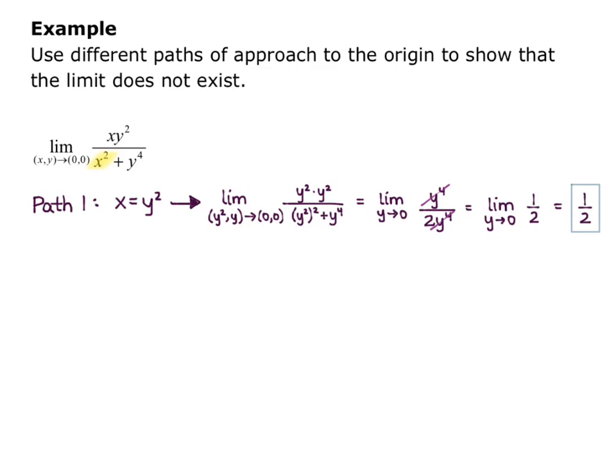Now I don't even have a y left, so that limit is obviously 1/2. So along path one, x equals y², which does approach the origin as x and y approach (0,0), the limit of my function, or the z value of my function, is approaching 1/2.